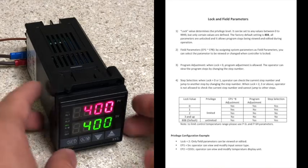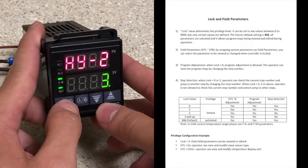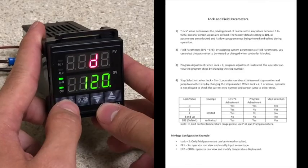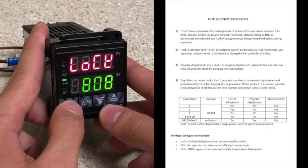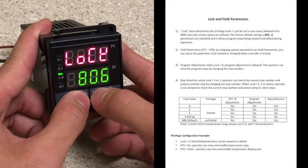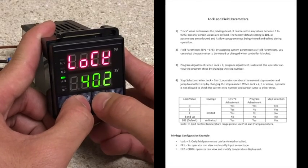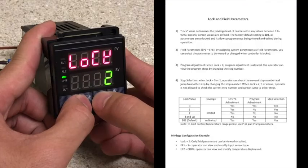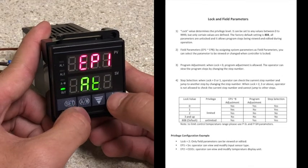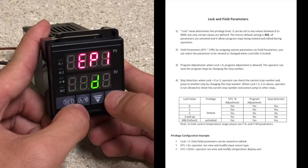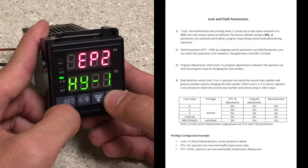So I'm going to go into my parameter setting profile by holding set, and going to the LOCK parameter, and changing this to 2. Changing EP1 to SN, or sensor, and changing EP2 to COOL.